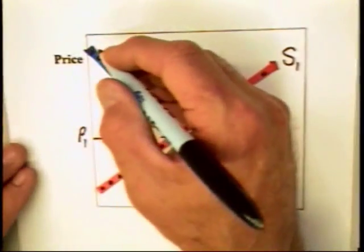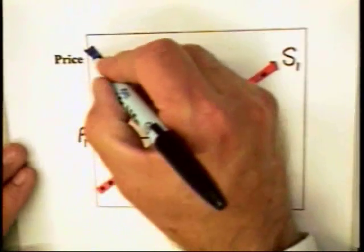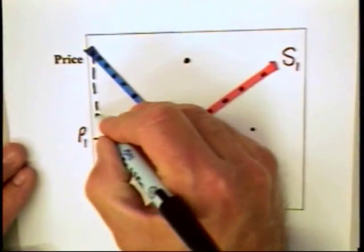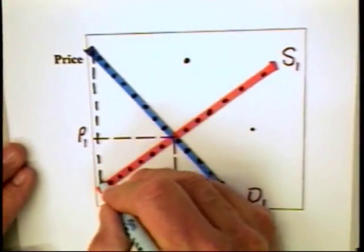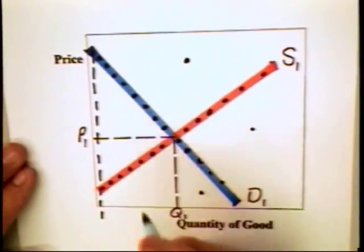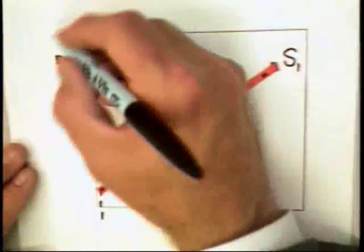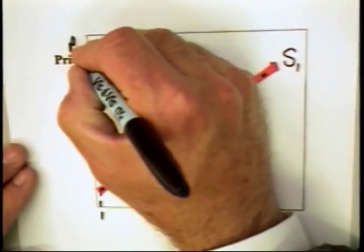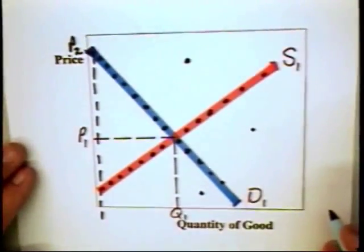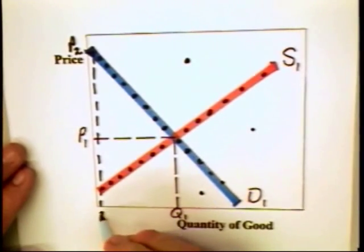We can also say that there is maximum efficiency because for this very first unit, the additional value is way up here on the demand curve. We can say P2. Consumers are willing to pay as much as P2 for that unit. In that sense, it's an indication of the additional value of that first unit.